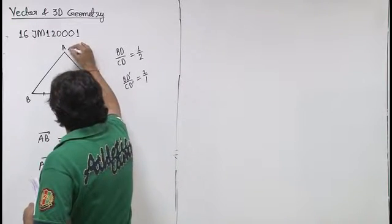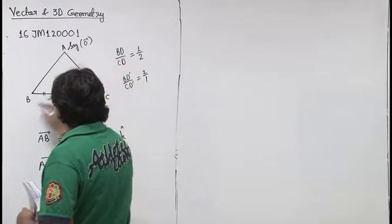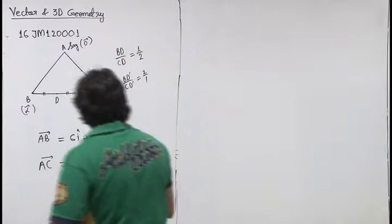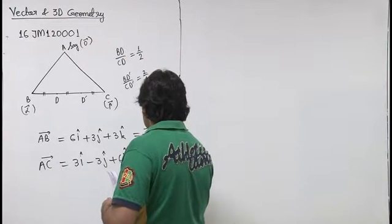Let me take A as origin, B is alpha, and C is beta. So AB vector will be alpha and AC vector will be beta.